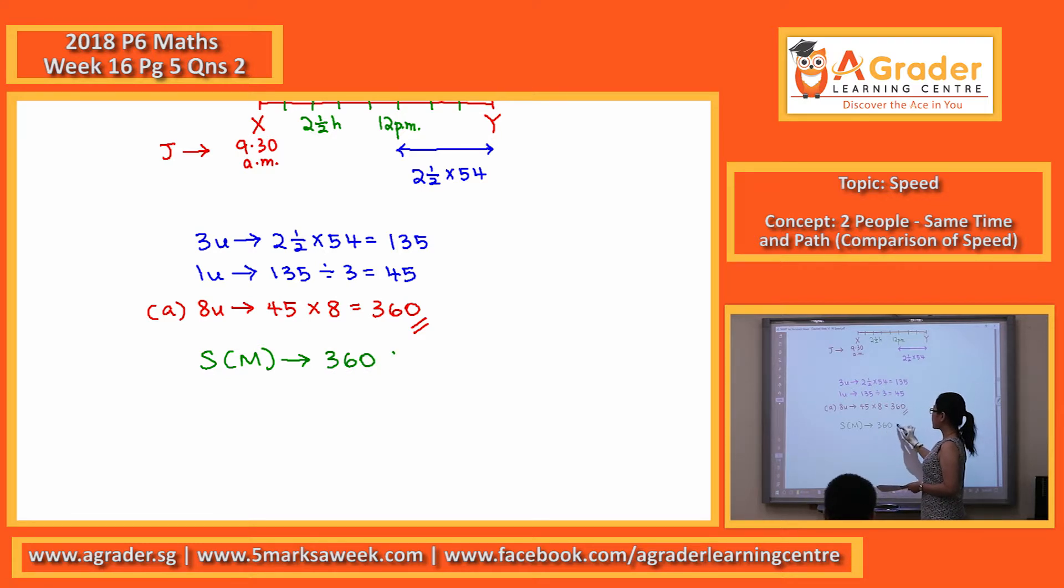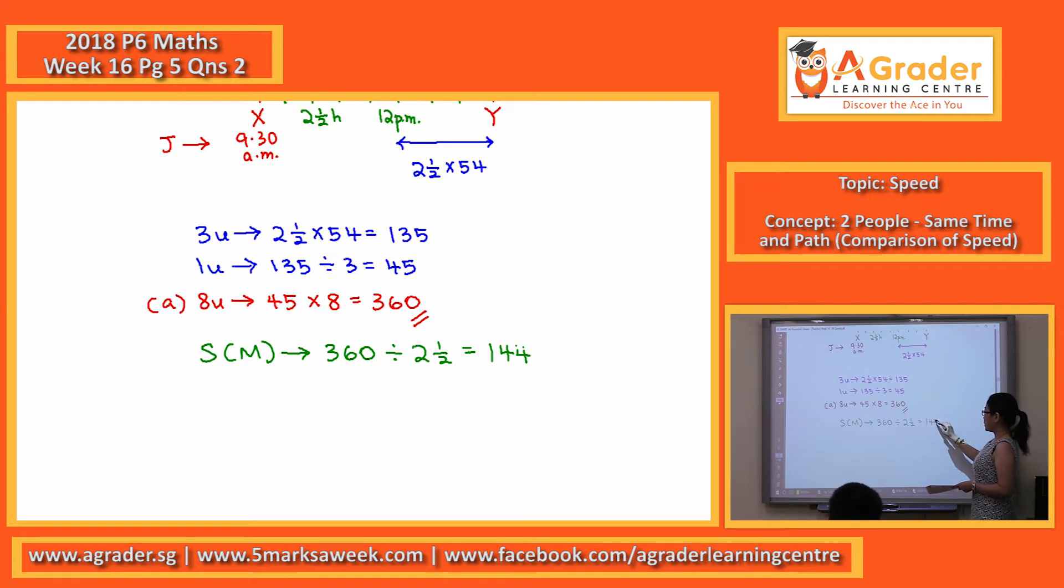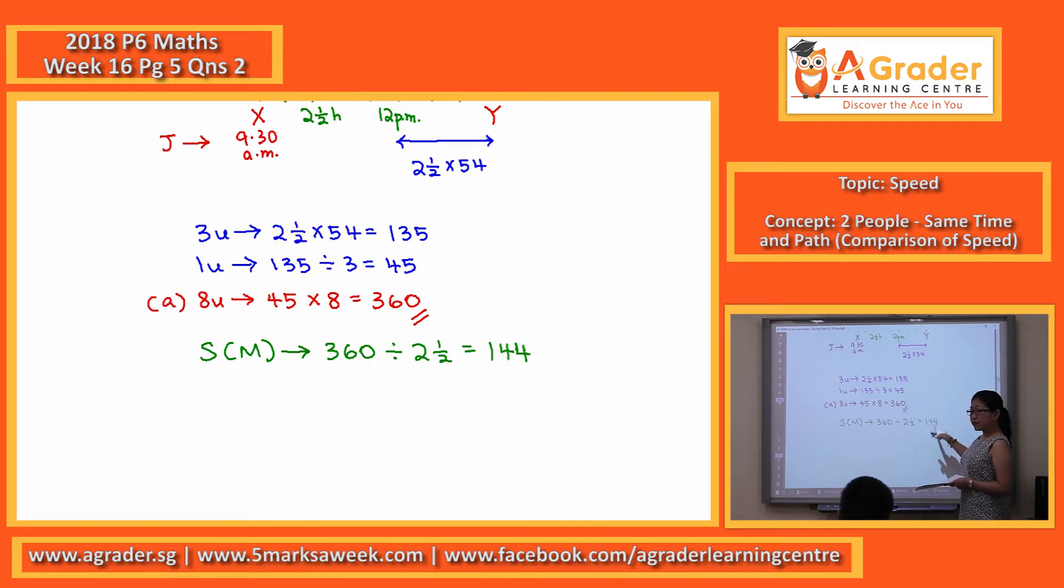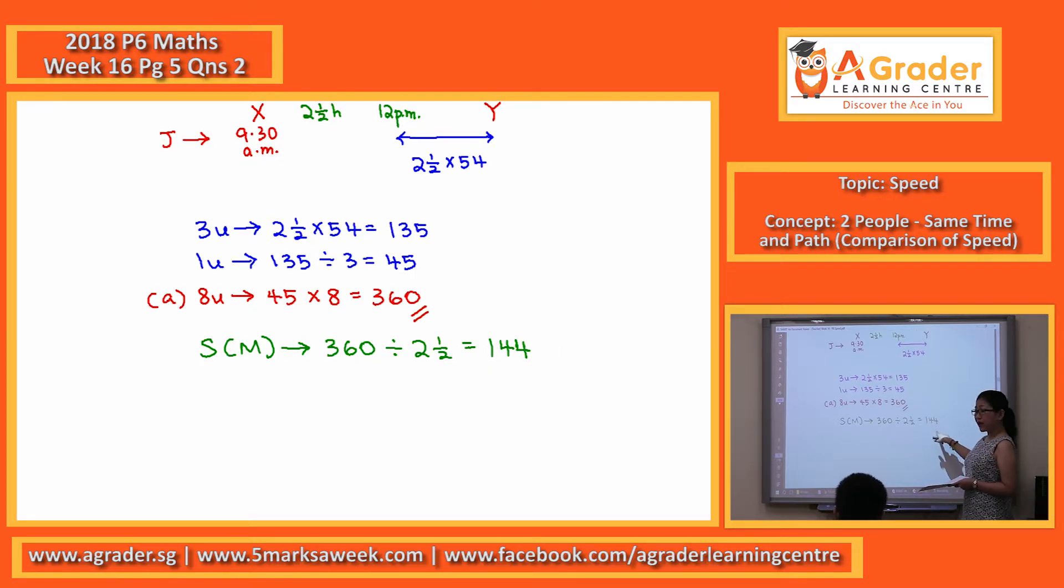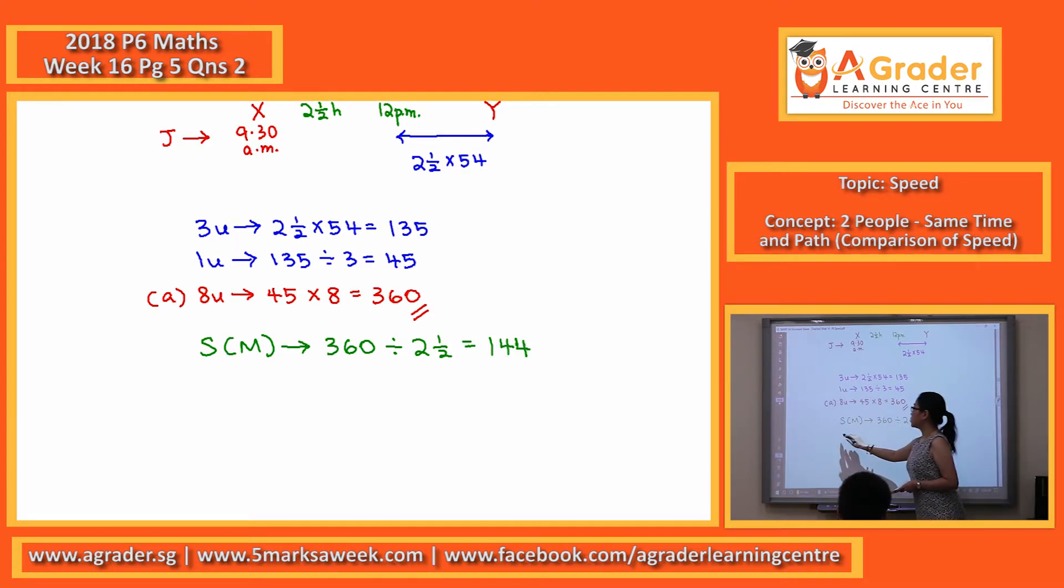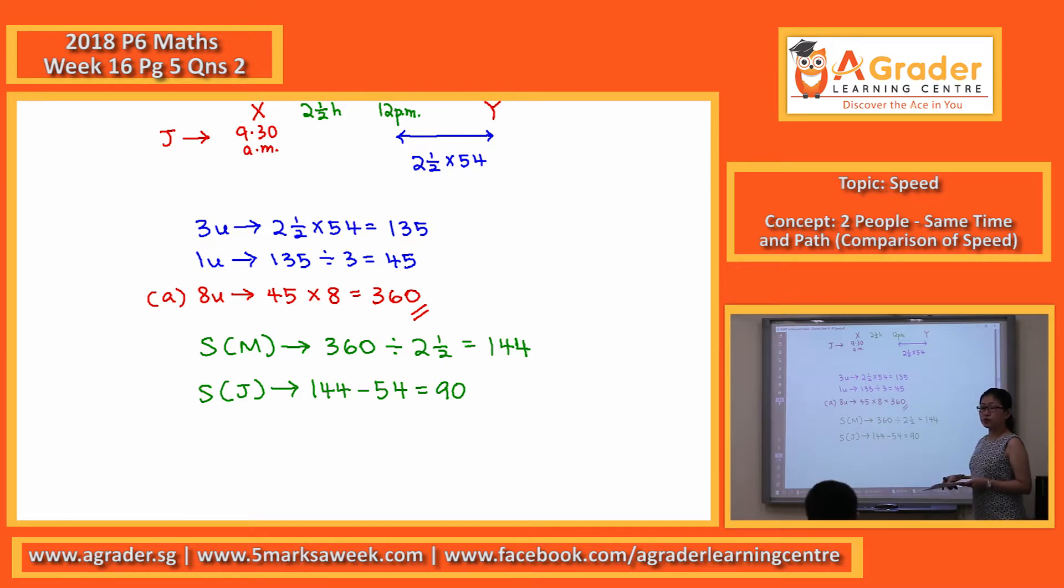144. So if Michael's speed being 144, he is 54 km per hour faster than Jen. To find the speed of Jen, we will take 144 minus 54, Jen's speed 90 km per hour.